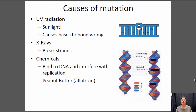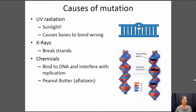One of the most potent mutagenic chemicals known is a compound called aflatoxin, and it's actually found in very trace amounts in peanut butter. My genetics professor said that if you're worried about mutations, pretty much the worst thing you can do is eat a peanut butter and jelly sandwich in the sun — which is basically what I did my entire childhood, so I probably have a few mutations from that.